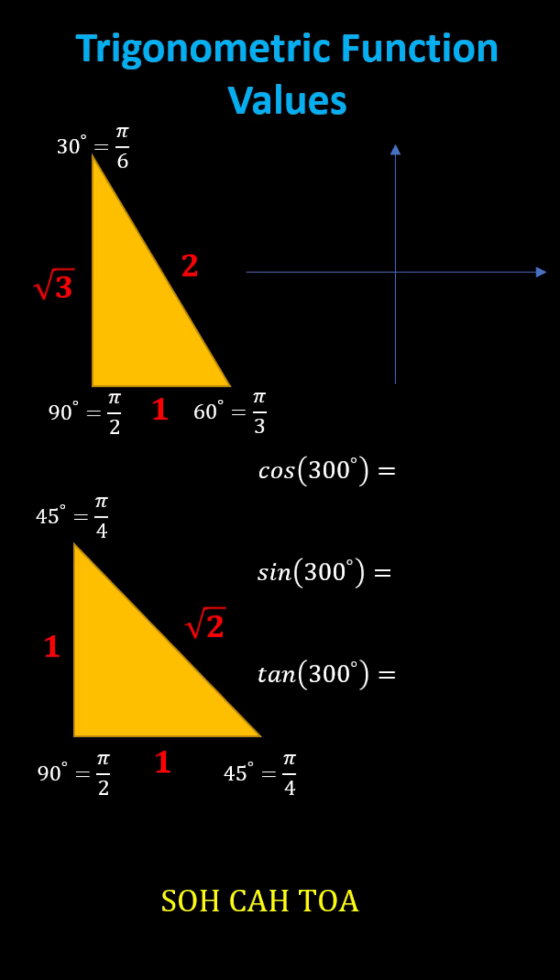We begin by sketching 300 degrees in standard position. The initial side is along the positive x-axis, and now we rotate counterclockwise 300 degrees. We rotate to the positive y-axis, we have 90 degrees.